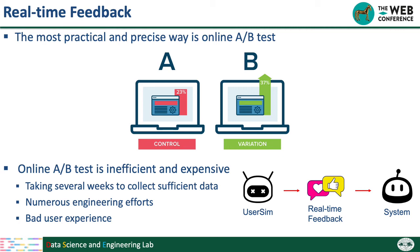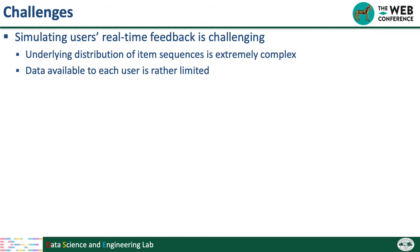In this work, we build a user simulator based on users' historical data. It can generate real-time feedback like real users, and then we can use this generated feedback to pre-train and evaluate new recommendation algorithms before we launch them online. However, simulating users' real-time feedback is a challenging task. The underlying distribution of item sequences is quite complex in historical data, because of the large amount of items in practical recommender systems. A second challenge is that to learn a robust simulator, we need a lot of historical data for each user, but in real-world systems, the data available to each user is usually limited.